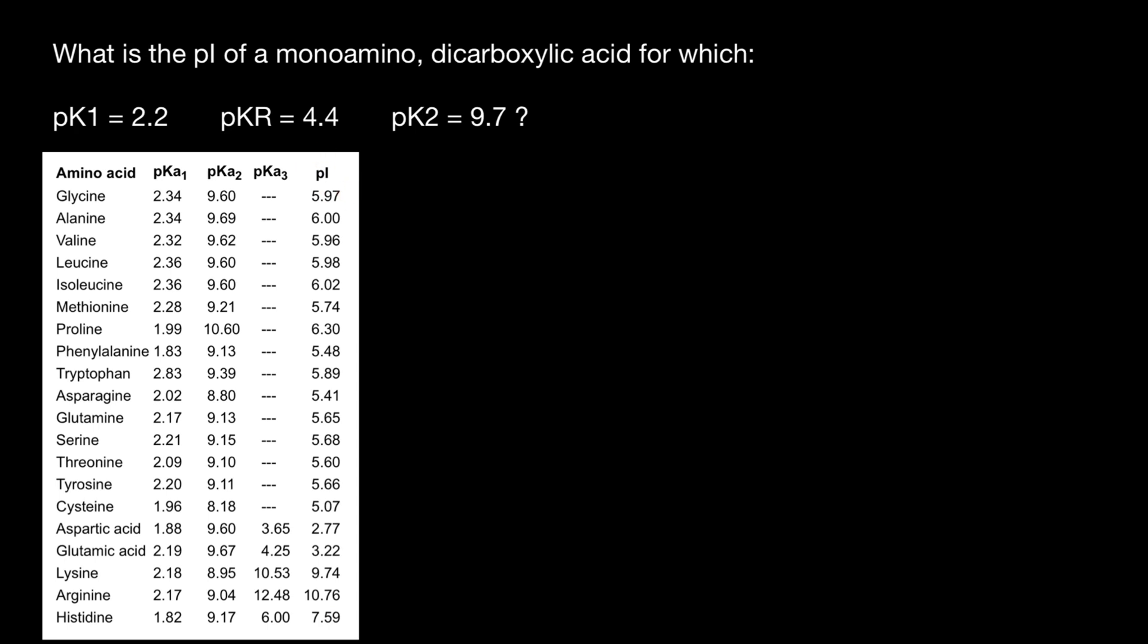So pI basically means that at this pH, the amino acid is going to be in the zwitterion form. So it would have positive and negative charge and would have net zero charge. At this pI, not 100% of the amino acid would be in zwitterion form, but at least 50%. This is what we call pI or isoelectric point. Also looking at this table, we see that most of the amino acids have only pKa1 and pKa2.